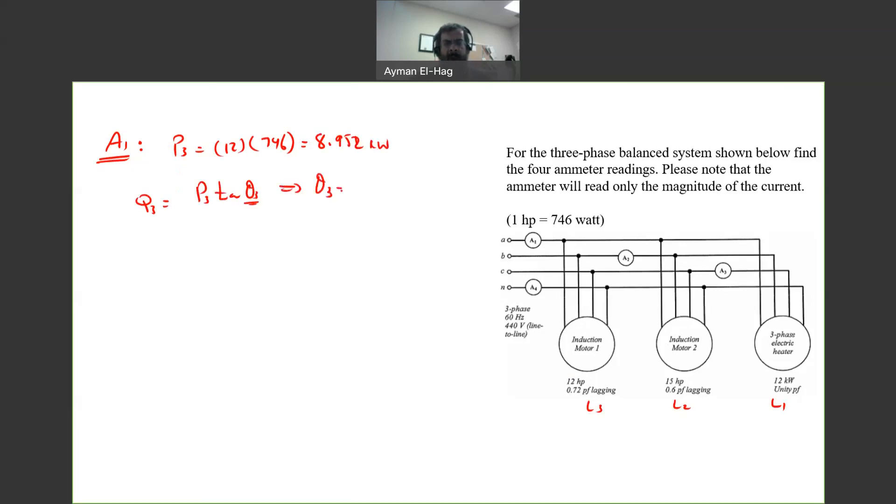Theta 3 is equal to cosine inverse of 0.72, which equals 43.95 degrees. From this, Q3 will equal 8.629 kVAR.